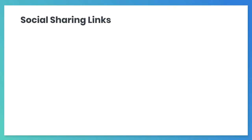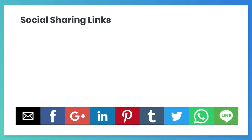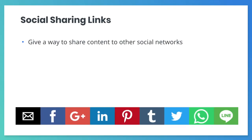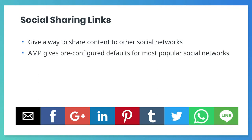Links to social media are common in modern web pages. By sharing content to other social networks you help grow your user engagement. Amp provides pre-configured defaults to share your content to the most popular social networks. The Amp component we'll use is an extended component, which means you need to include its JavaScript.